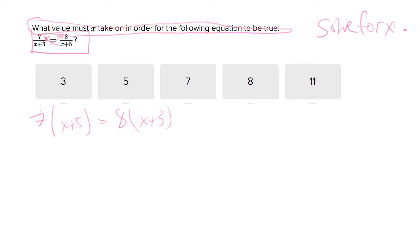Then let's distribute those 7s and 8s. So we end up with 7x plus 35 equals 8x plus 24.